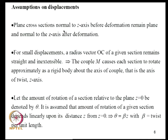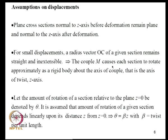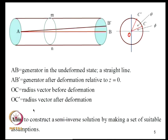We assume that plane cross sections normal to the Z-axis before deformation remain plain and normal to the Z-axis after deformation. For small displacements, a radius vector OC of a given section remains straight and inextensible — OC equals OC-prime in length. The couple M therefore causes each section to rotate approximately as a rigid body about the axis of twist, which is the Z-axis. The rotation of a section relative to Z=0 is denoted theta, with C at angle phi from horizontal.